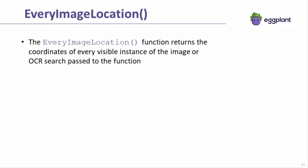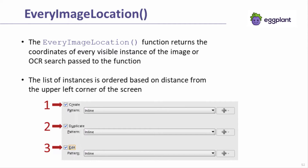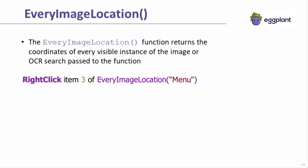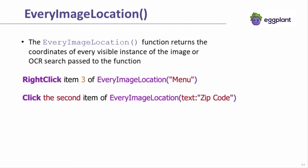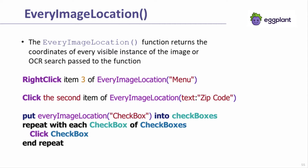The next function I'll discuss is the EveryImageLocation function. EveryImageLocation returns the coordinate positions of all instances for an image search or OCR search on the screen. The coordinates are returned in the form of a list, ordered based on the instance's distance from the upper left corner of the sub-screen. For example, the instance closest to the upper left corner will have its coordinate location appear first in the list. The first example uses the item number syntax to reference the third item from the list returned by EveryImageLocation. The second example uses the ordinal syntax to reference the second item. Note the use of a repeat with each repeat loop in the third example to iterate through each checkbox and click on it.